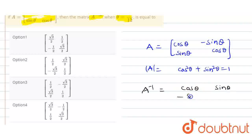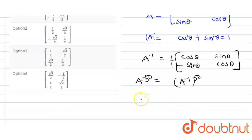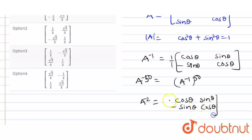So A inverse equals [[cos theta, sin theta], [-sin theta, cos theta]]. Since the determinant is 1, A power minus 1 is that matrix. A power 50 means A power minus 1 raised to 50. So A power minus 2 is [[cos theta, -sin theta], [sin theta, cos theta]] multiplied by itself.